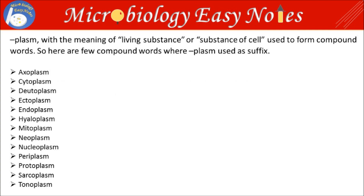Plasm with the meaning of living substance or substance of cell is used to form compound words. Here are a few compound words where Plasm is used as suffix: Exoplasm, Cytoplasm, Deutoplasm, Ectoplasm, Endoplasm, Hyloplasm, Mitoplasm, Neoplasm, Nucleoplasm, Periplasm, Protoplasm, Sarcoplasm, Tonoplasm, etc. Being learners, sometimes we may confuse with them, so here are the meanings of some of these terms.